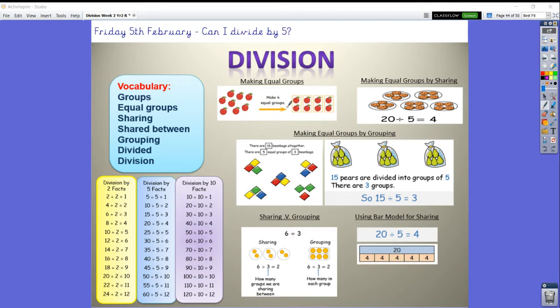We've been making lots of equal groups. We've also been sharing them out. One for you, one for me, one for you, one for me. We've also been making equal groups by grouping, so taking a group of five, taking a group of three. We've had a little think about when we share and when we group and if we can we've linked it to the bar model.